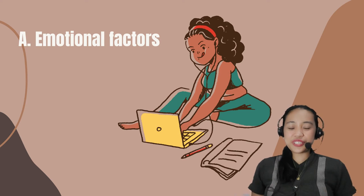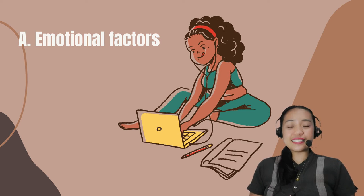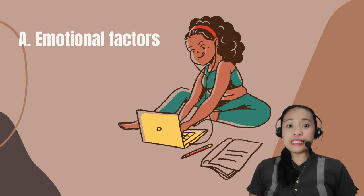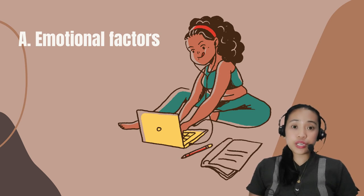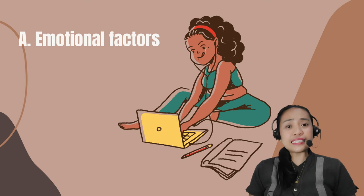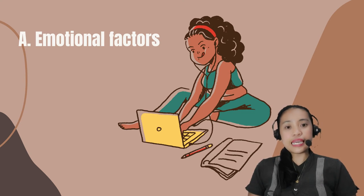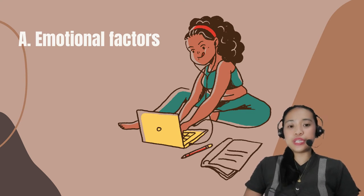The correct answer is Letter A. Reading disability was found to be related to emotional factors. Therefore, a child who is neglected and abused has a higher chance of having difficulty gaining reading skills.